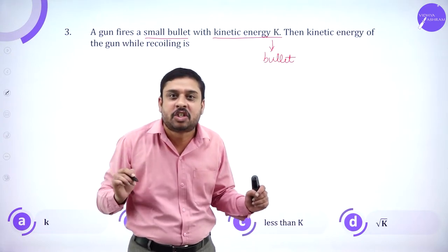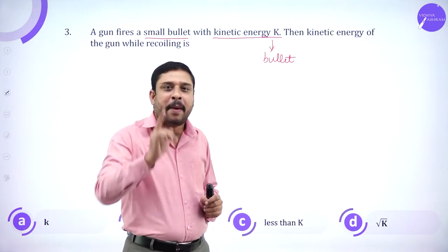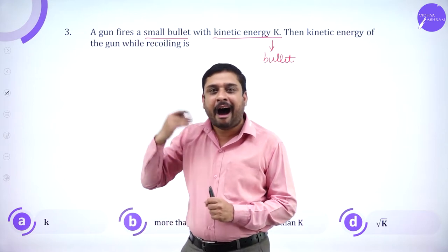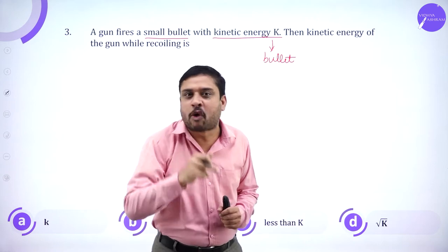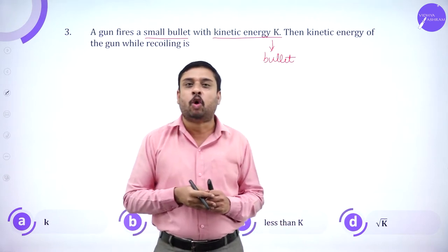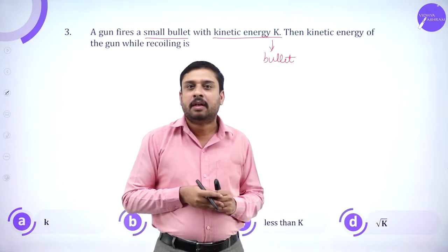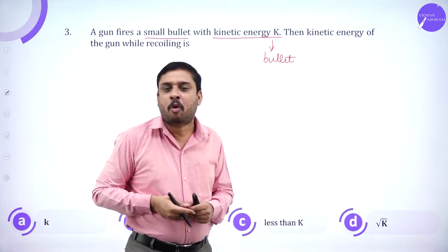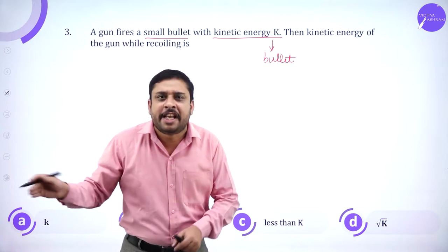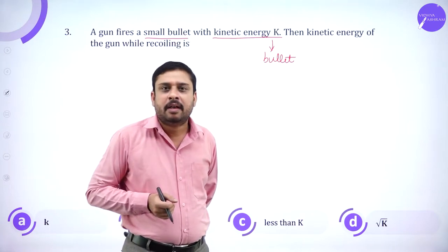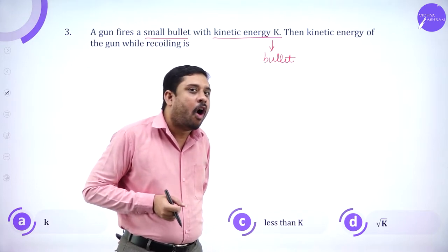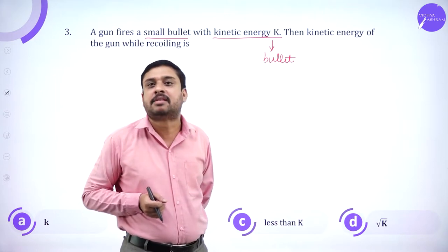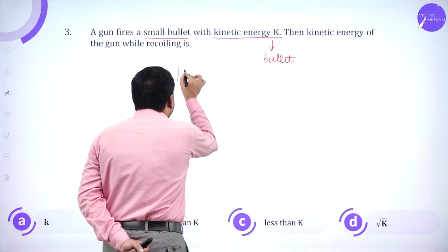What happens to the kinetic energy of the gun after firing has taken place — after the bullet is released from the gun? According to conservation of momentum, the momentum of the gun and the bullet has to be conserved. Remember, the gun also has some mass, whereas the bullet also has some mass.